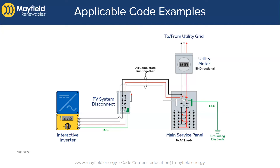It's worth pointing out that all conductors run together. You will have some sort of conduit coming from your main service panel over to the new PV system disconnect. That can be PVC or rigid, and you follow the rules in Article 230 for the wiring method. You bond those as appropriate based on whether it's PVC versus metal conduit.